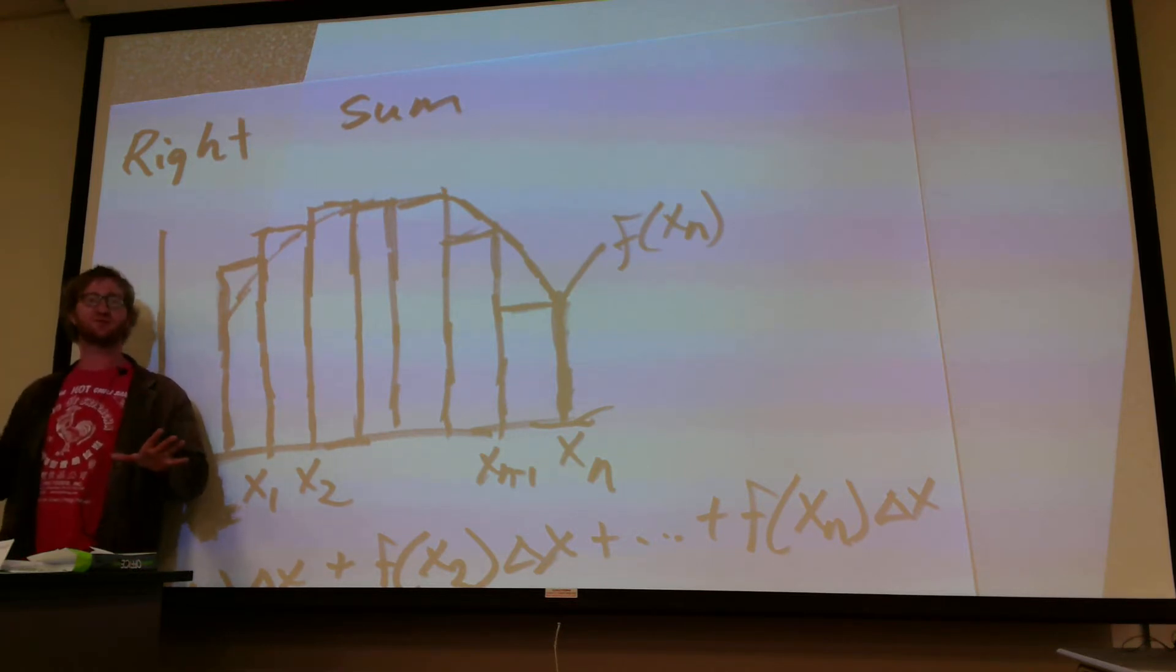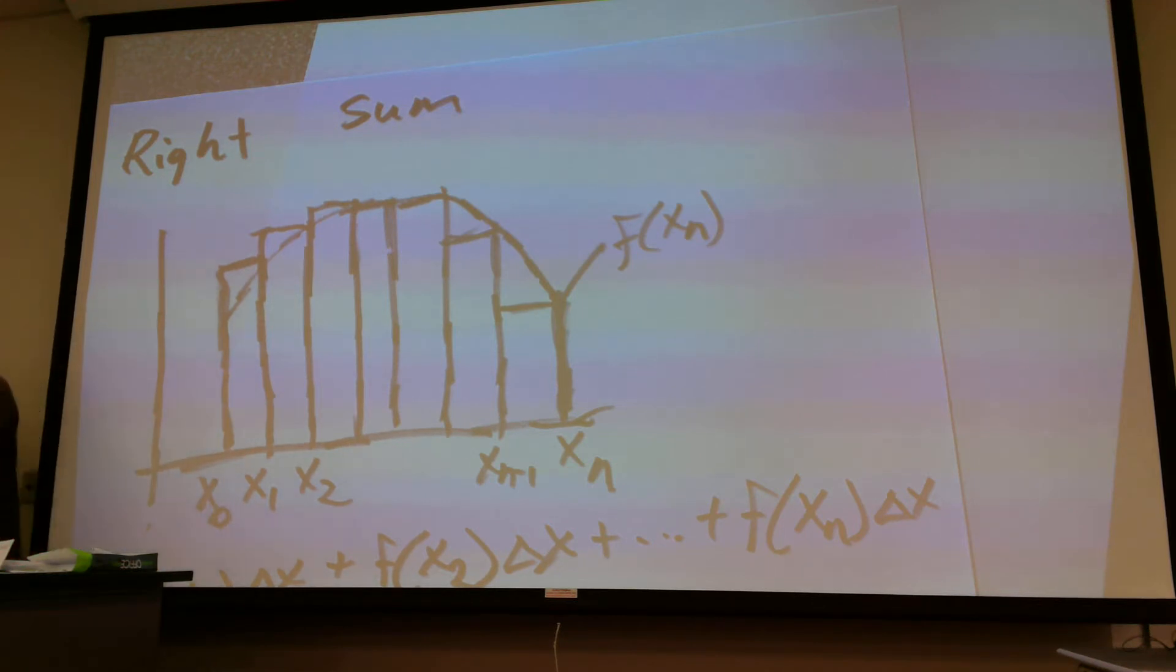I would not recommend doing this for your all-second credit project, but why don't we consider trapezoidal sums?